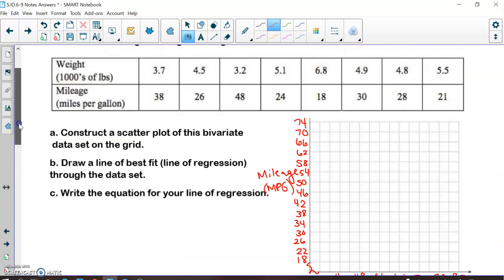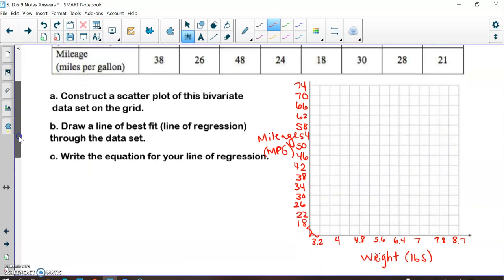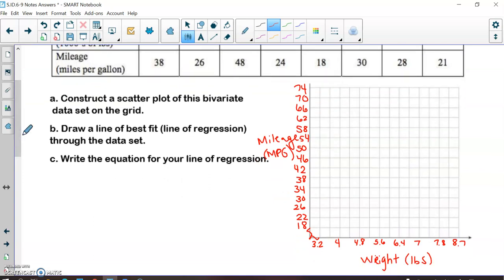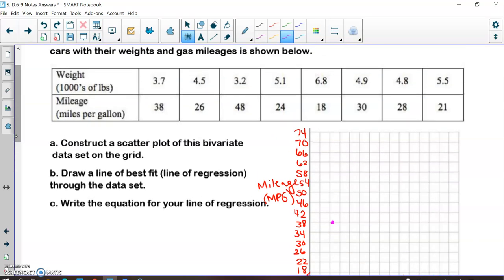So now we're going to plot these points. My first point is at 3.7 and 38. So remember 3.6 is in between the 3.2 and the 4. So a 3.7 and a 38 is going to be maybe about here. Alright, so I'm going to have you pause the video. I'm going to have you plot the rest of these dots by using the same scale.